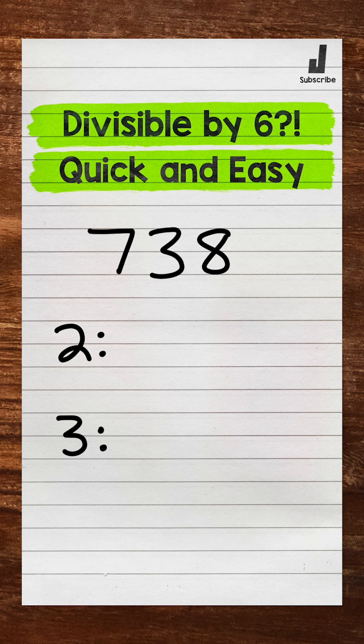What we need to do is check if the number is divisible by 2 and 3. If so, the number is divisible by 6. For 738, that number ends in 8, so it is divisible by 2.